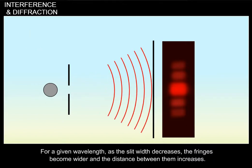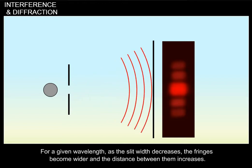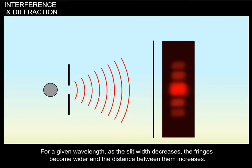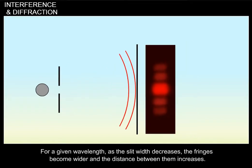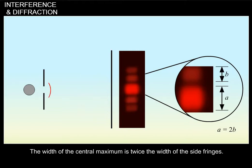For a given wavelength, as the slit width decreases, the fringes become wider and the distance between them increases. The width of the central maximum is twice the width of the side fringes.